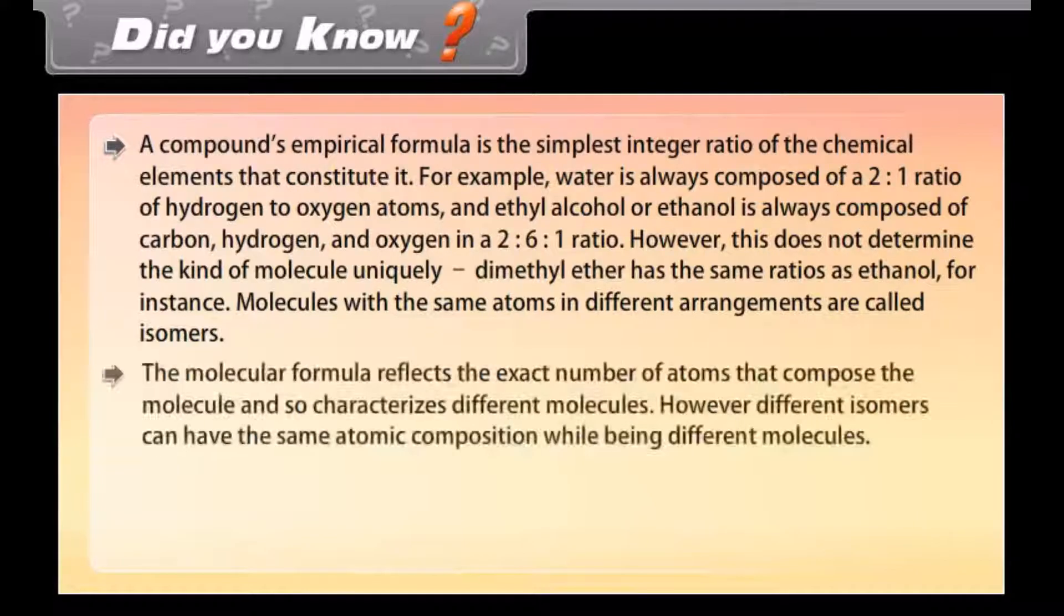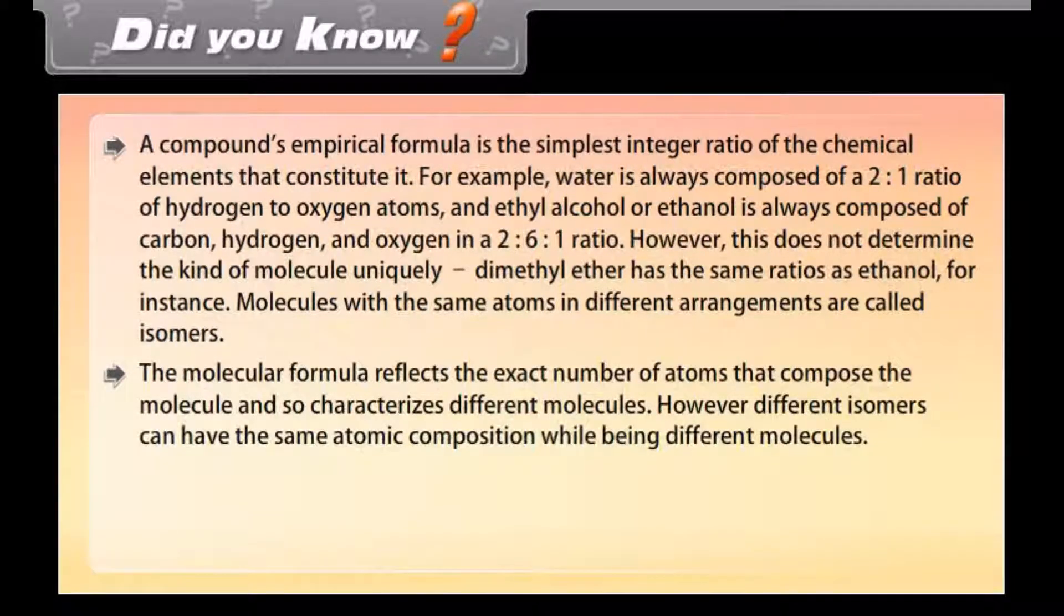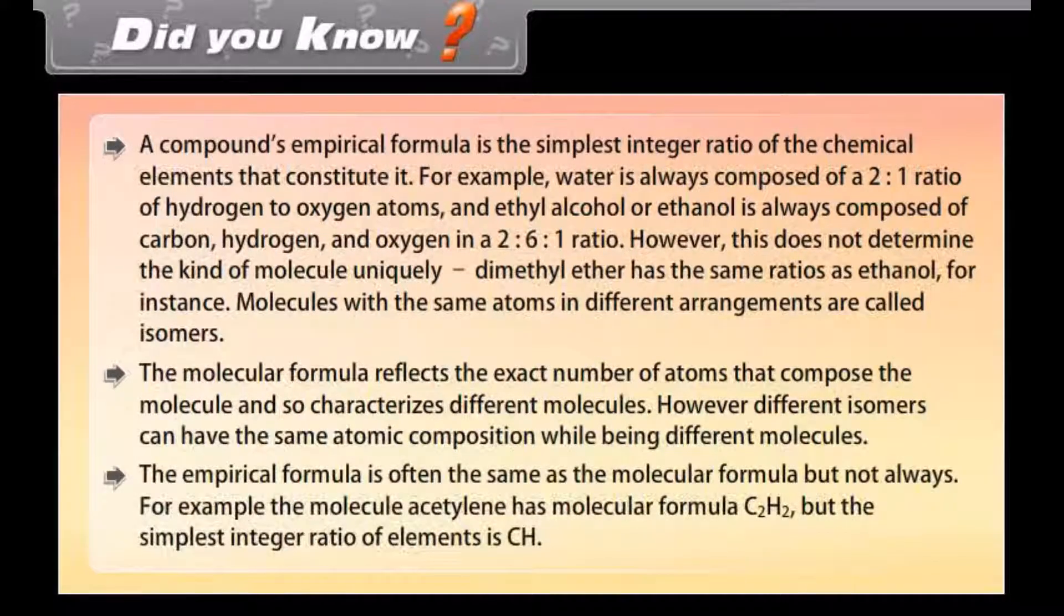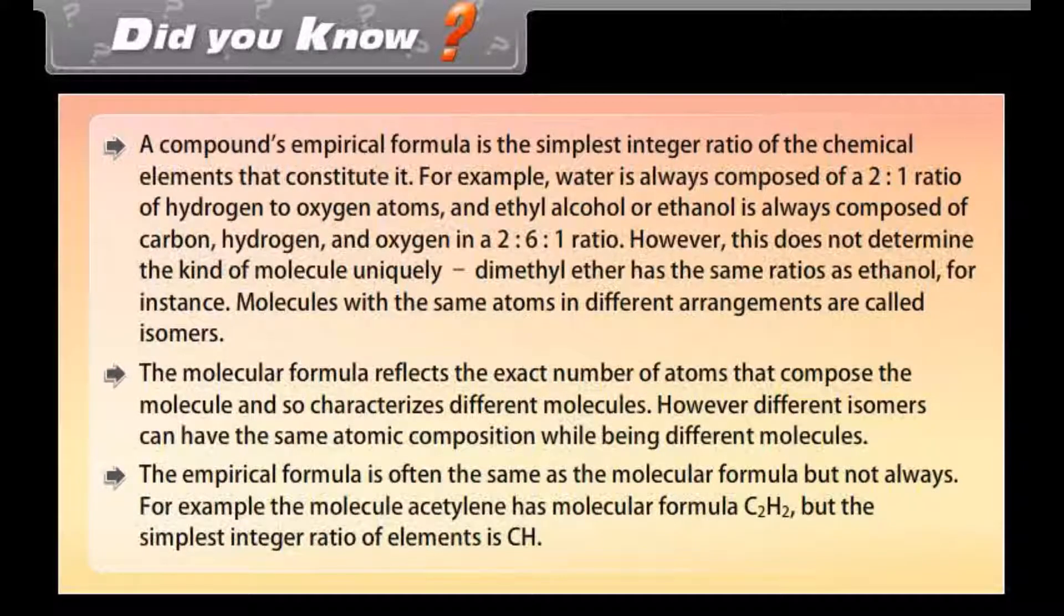The molecular formula reflects the exact number of atoms that compose the molecule and so characterizes different molecules. However, different isomers can have the same atomic composition while being different molecules. The empirical formula is often the same as the molecular formula but not always. For example, the molecule acetylene has molecular formula C2H2, but the simplest integer ratio of elements is CH.